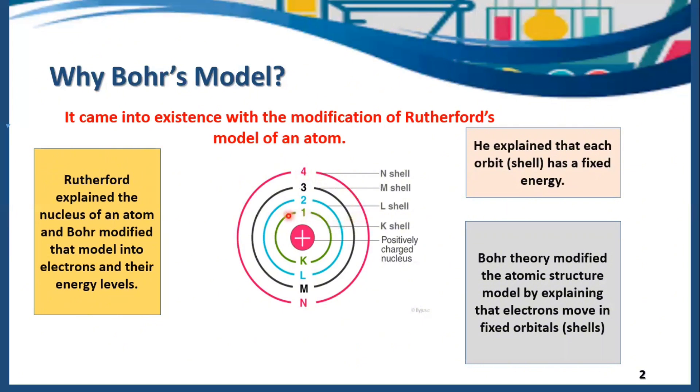Say for example, the first shell here is K-shell. K-shell has its own fixed energy. By moving on, we have second shell here, that is L-shell. It has its own energy. Then comes third shell, that is called as M-shell. It has its own energy. On fourth, we have N-shell, and N-shell has its own energy. In this way, every shell in an atom has its own fixed energy, and this concept was explained by Bohr.